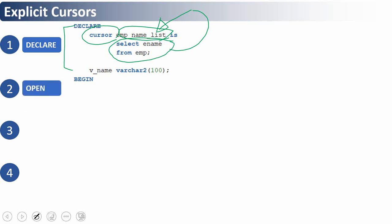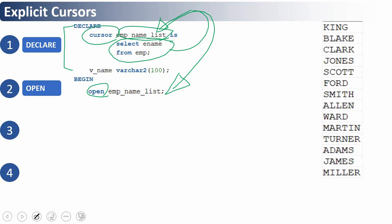The second step is we need to open the cursor. To open the cursor we use the keyword OPEN followed by the cursor name. The moment Oracle engine executes the OPEN statement, it executes the underlying SQL statement and stores all the result set in the particular memory location — this memory location is called the cursor.